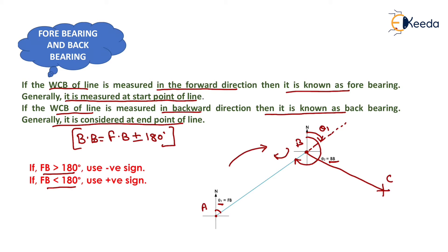Now we can move to the included angle. The angle between two survey lines is known as the included angle. So if lines a-b and b-c are measured, then this angle will be known as the included angle.